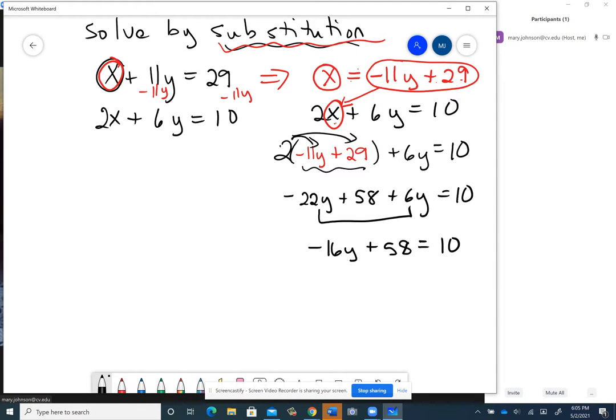I'm just going to continue that solution process. Now I'm going to take away 58, so I wind up with negative 16y equals negative 48. And then I've got to divide by negative 16 to get the y by itself. And I'll have that y equals - 48 divided by 16 is 3, negative divided by negative is positive.